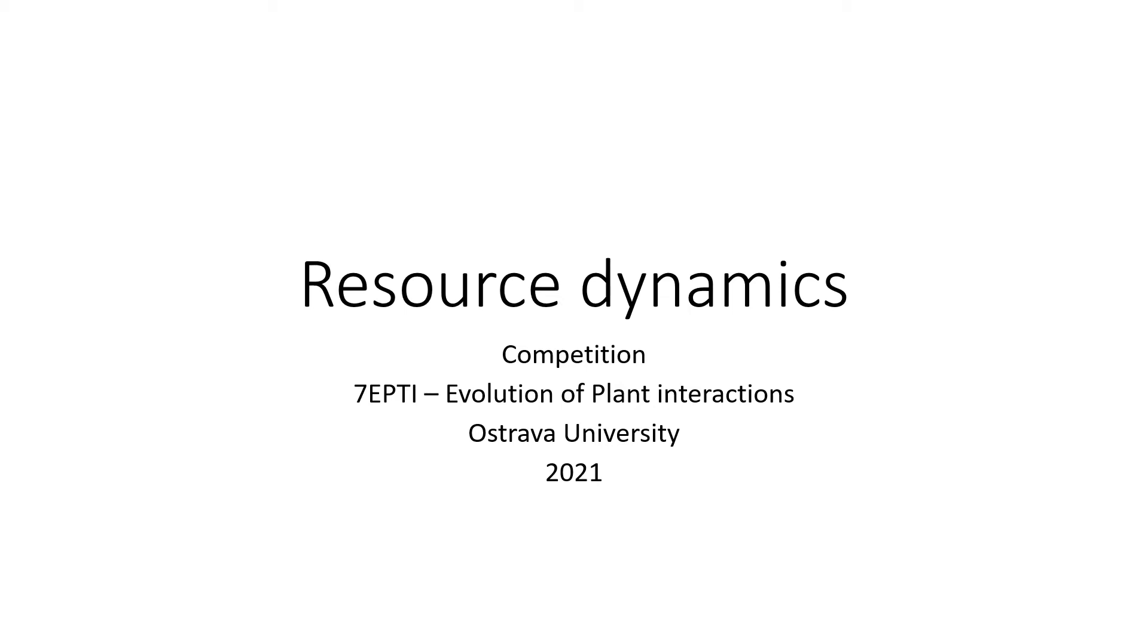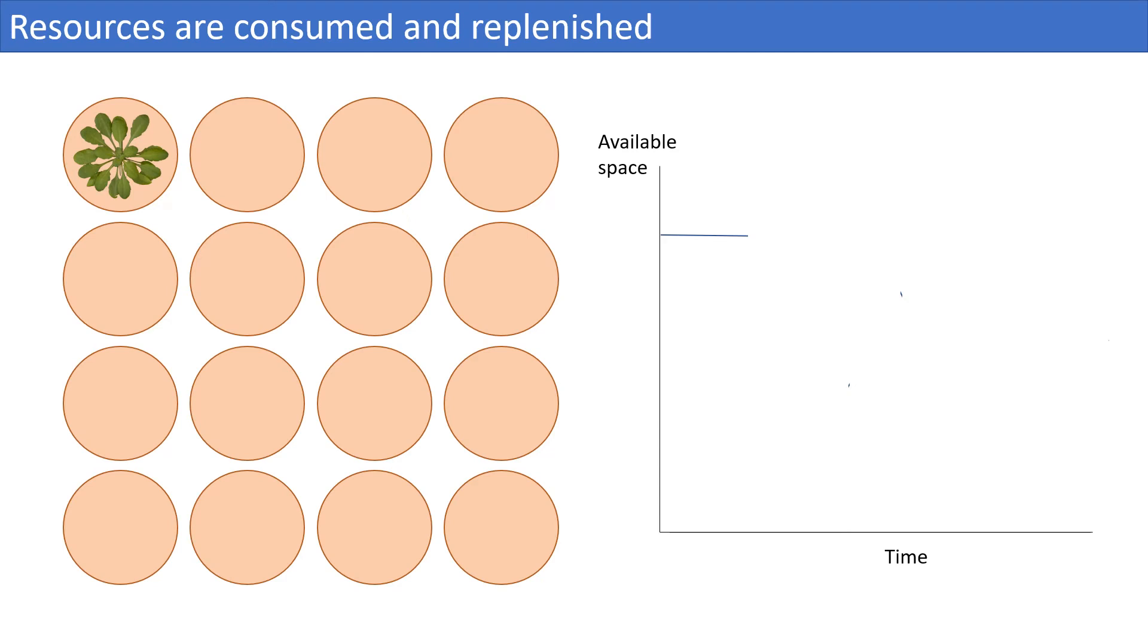This video is part of the chapter on competition in the course Evolution of Plant Interactions at Ostrava University. Resource abundance decreases as they are consumed by plants and increases as they are renewed through biotic and abiotic processes.